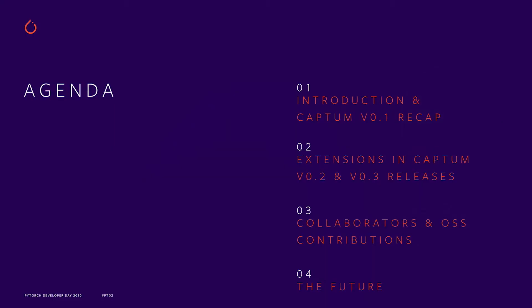This talk is structured as follows. I'll start with a brief introduction of model interpretability and recap the Captum library that we introduced during the previous PyTorch developer conference. Then I'll talk about the extensions of the library that we made during the recent two releases. After that, I'll walk you through the collaborations, external contributors, and the future directions we are taking for the library.